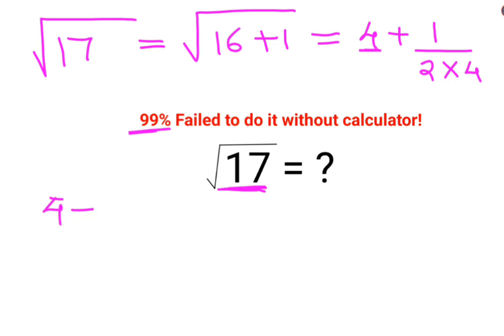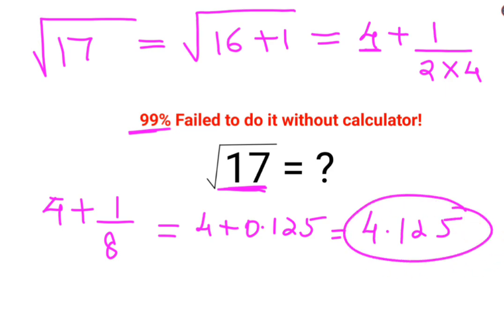This comes out to be 4 plus 0.125, which equals 4.125, whose square is very close to 17.01 something. I am not saying you will get the exact answer, but yeah, you will get something which is very close to your imperfect number.